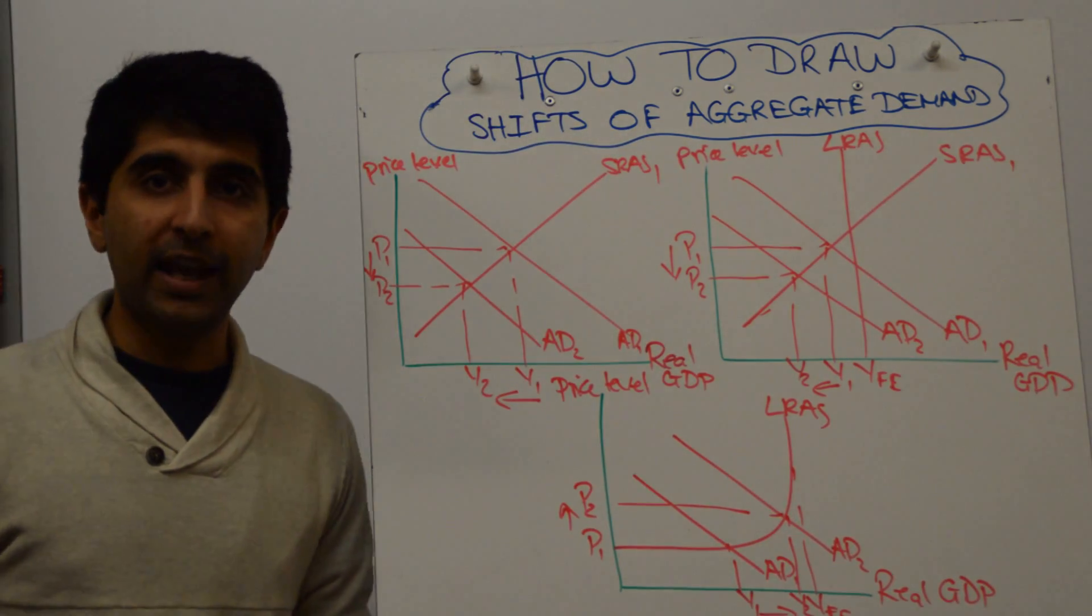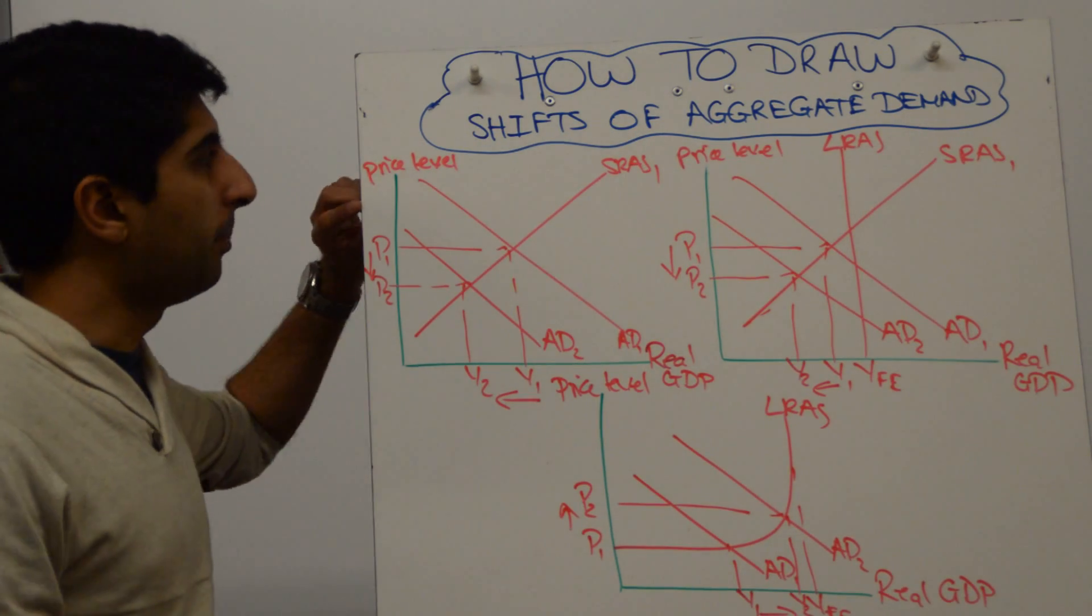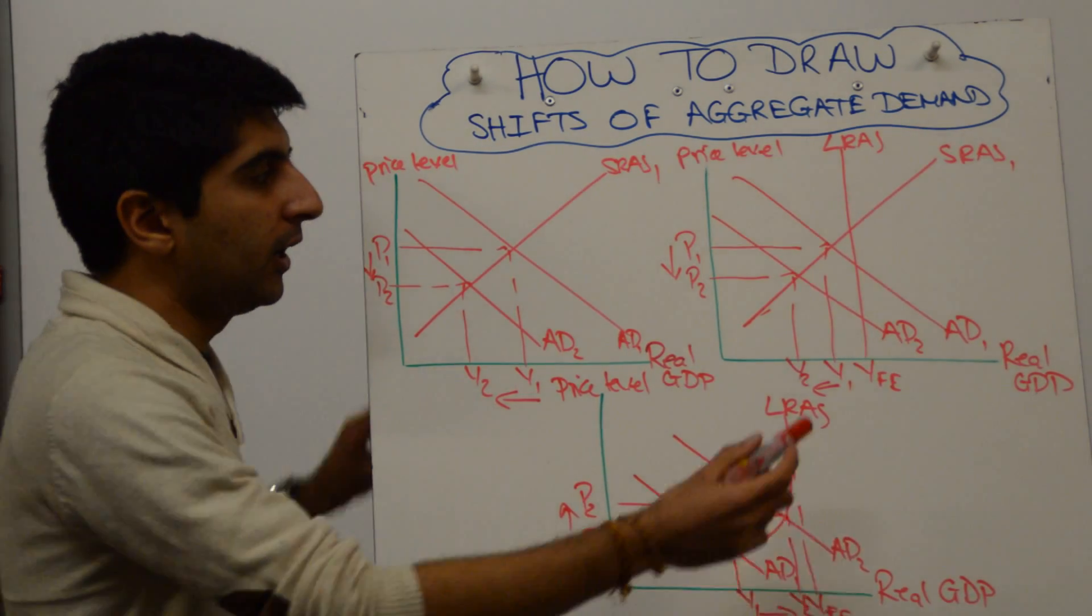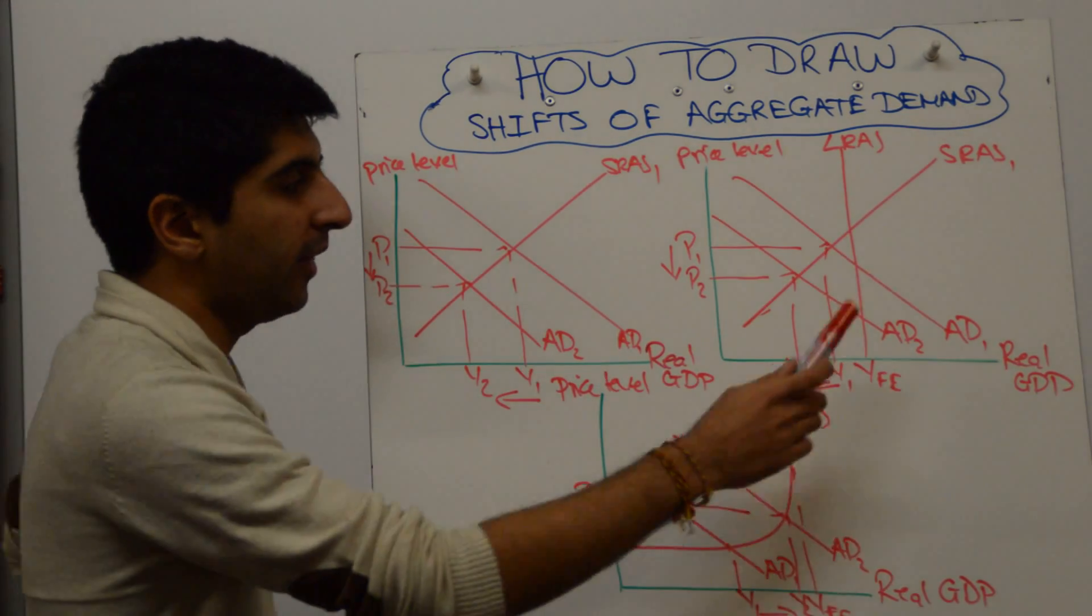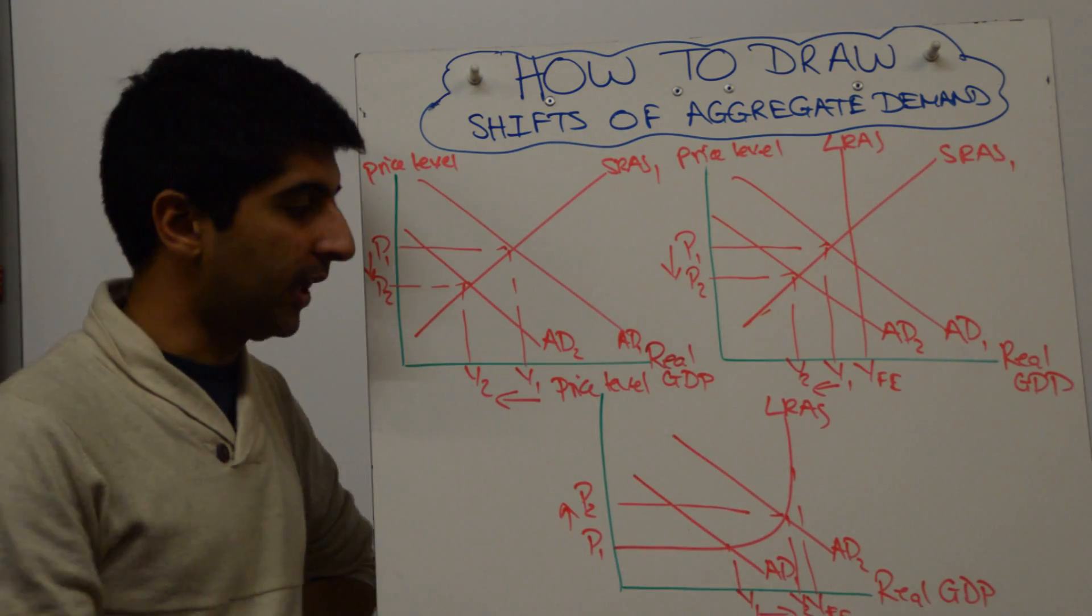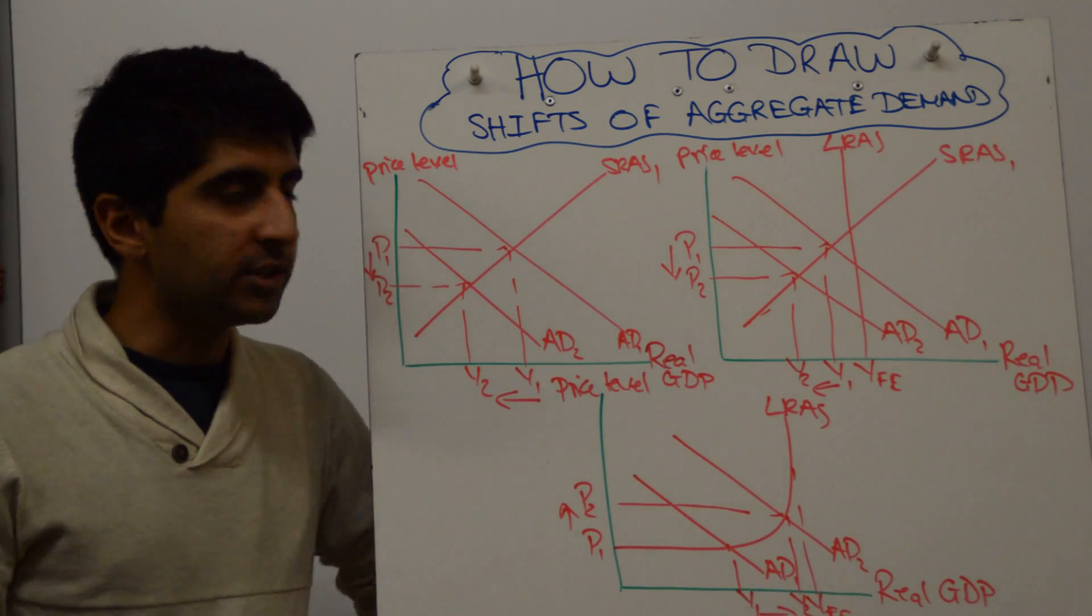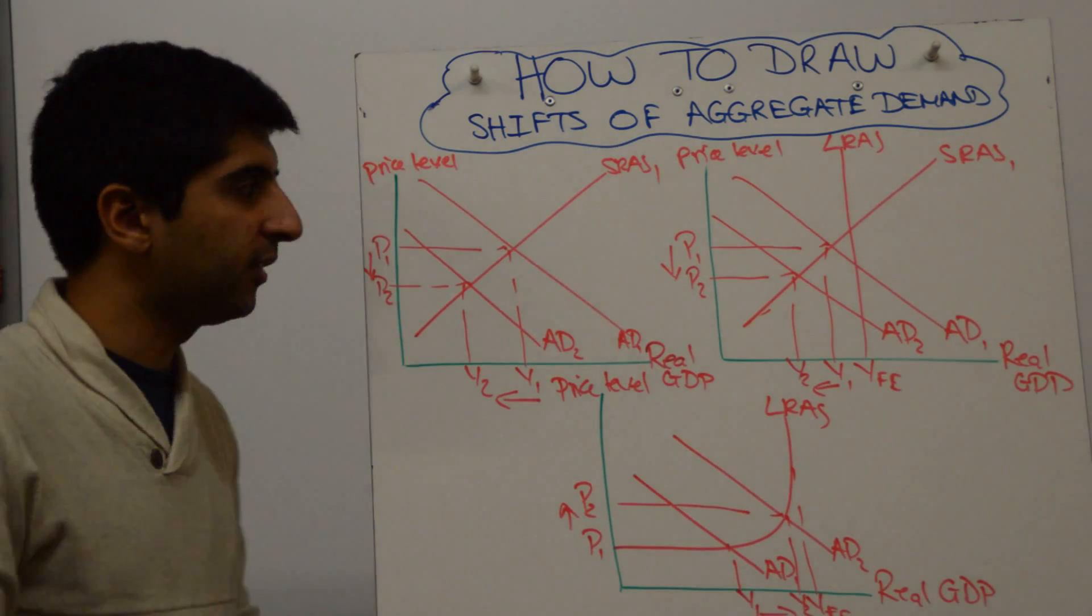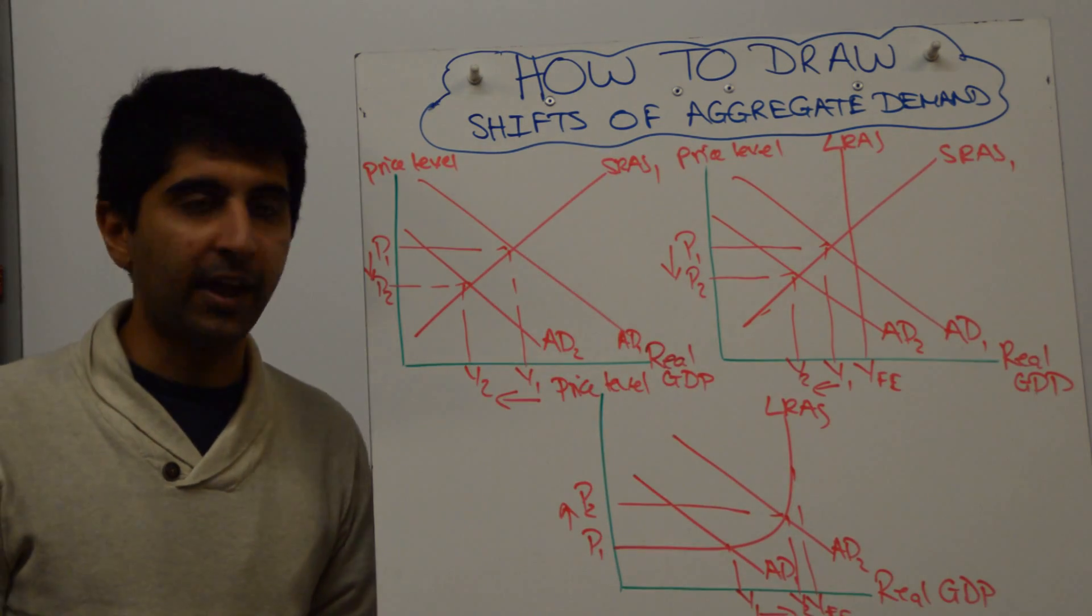So you've got three ways of shifting AD, whichever one you're comfortable with. Your basic AD SRAS, your full classical model with AD SRAS and LRAS, and your Keynesian model here with a Keynesian LRAS. So whichever one you want to use and you're comfortable with, use it. Three different ways of shifting aggregate demand there.